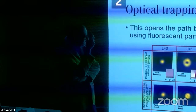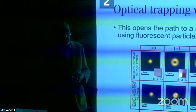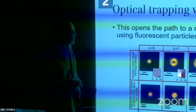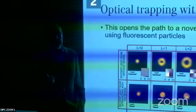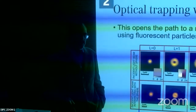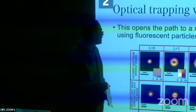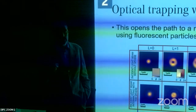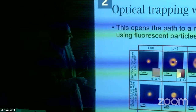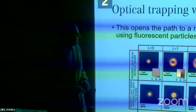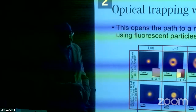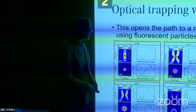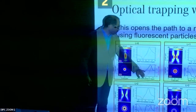This opens new possibilities: trapping fluorescent particles in the dark part of a vortex beam, so the optical trap doesn't bleach the fluorescence — which normally happens with Gaussian beams. This is also relevant for biological samples — cells or bacteria trapped in the dark region are not damaged by the light intensity.